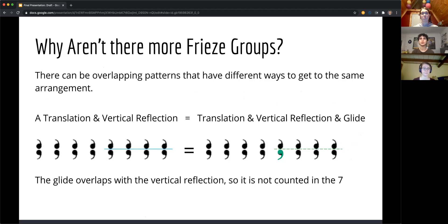So why aren't there more frieze groups, you might ask? This is because with the series of transformations you can do to a pattern in one dimension, some of the transformations will create patterns that are the same. So for instance, on the slide, you can see we have a translation and vertical reflection pattern. And this is the same as a translation, vertical reflection, and glide, because as you can see by the green comma, the glide overlaps with the vertical reflection, so it is not counted in the seven.